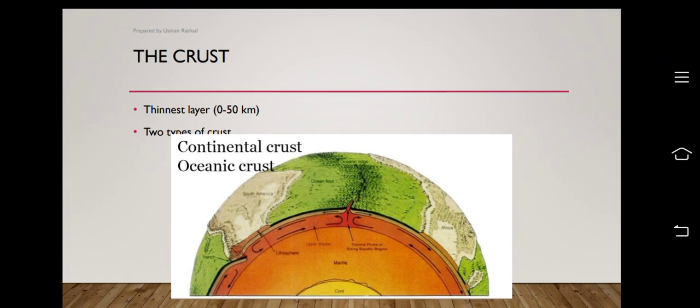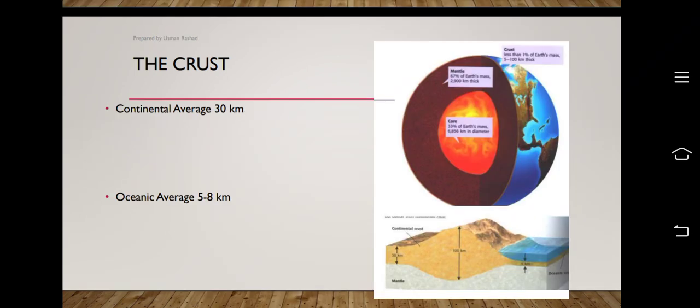The crust is the thinnest layer of the earth's three layers. There are two main types of crust: continental crust and oceanic crust. Continental crust, as its name indicates, relates to land, while oceanic crust relates to water. The oceanic crust has a smaller depth — extending only about 5 to 8 kilometers — while the continental crust extends up to 30 kilometers beneath the earth's surface.